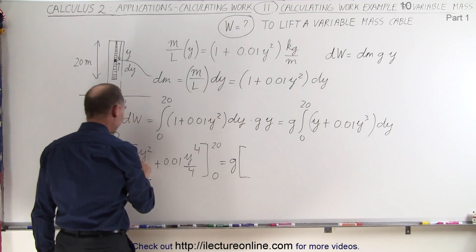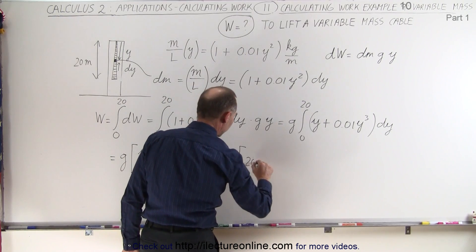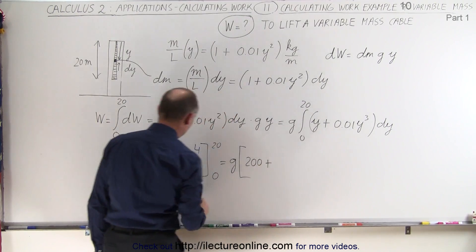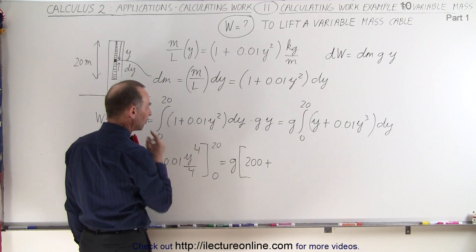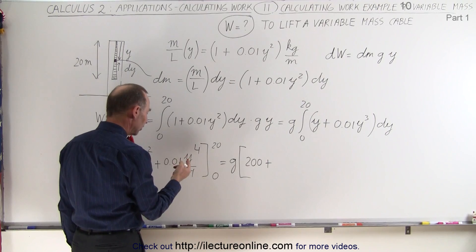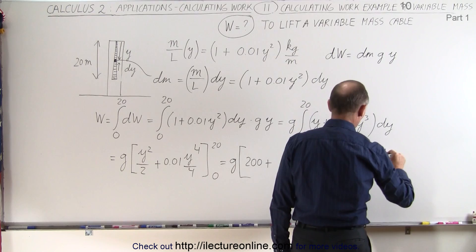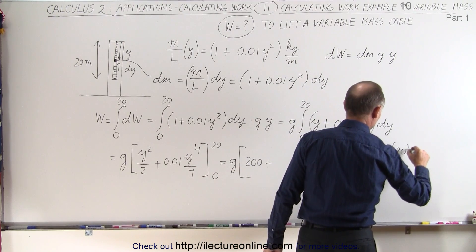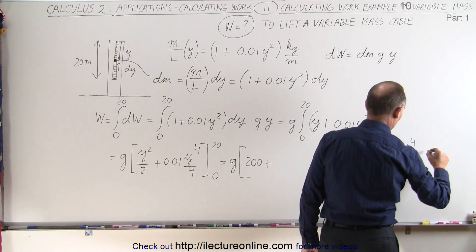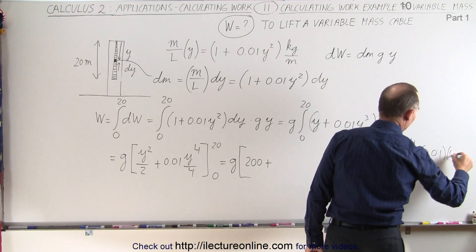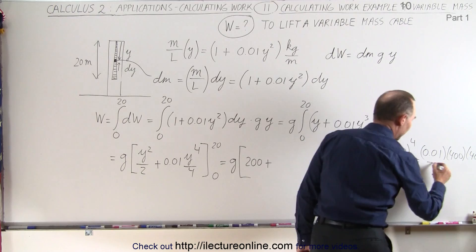g times y squared. 20 squared is 400 divided by 2, which is 200 for the first term, plus. Here we have 20 squared squared. So 20 to the fourth power. That would be 400 times 400. Let's do that on the side here. So we have 0.01 times 20 to the fourth power divided by 4, which is equal to 0.01 times 400 times 400 times 400, and divided by 4.